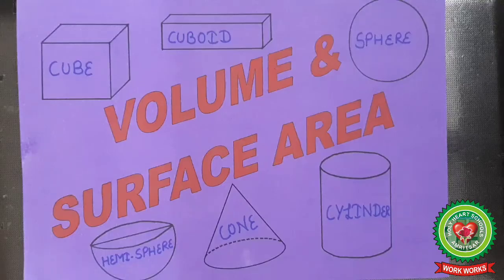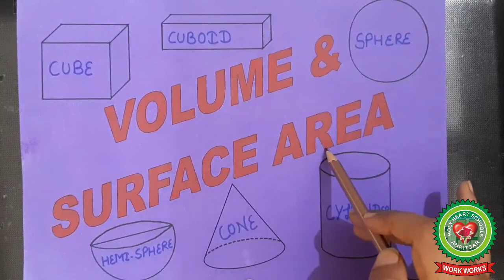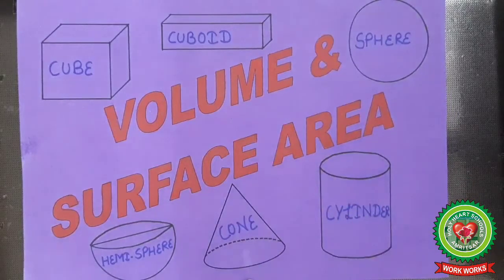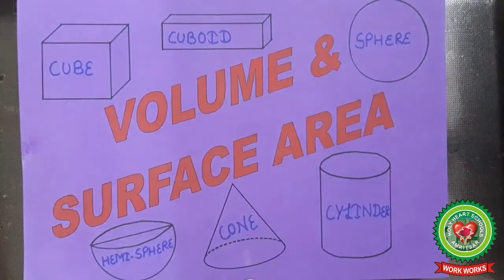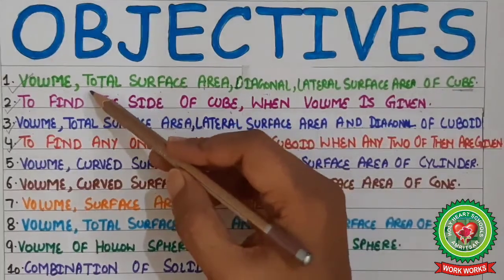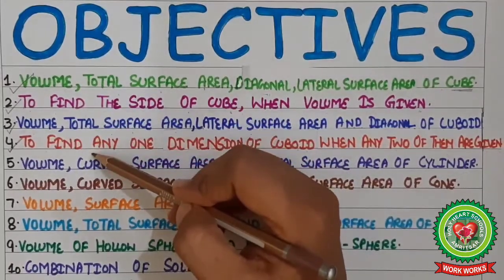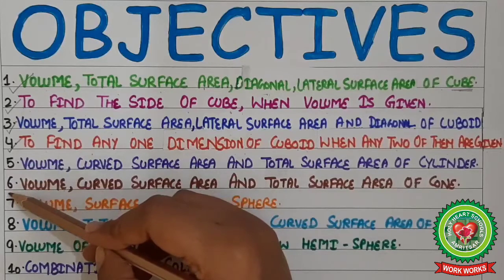Students, welcome to Maths class. Today we will discuss the next types of the topic volume and surface area, which is used to find the volume and surface areas of three-dimensional figures. Before starting with the questions of today's class, we will discuss the objectives. So far we have discussed the first four objectives. Now we will discuss the next two objectives: objective number five and objective number six.